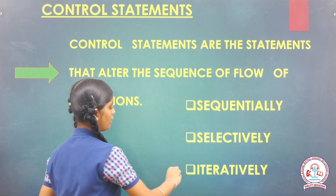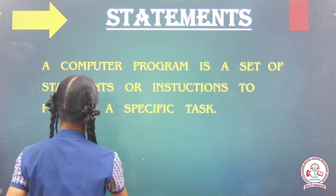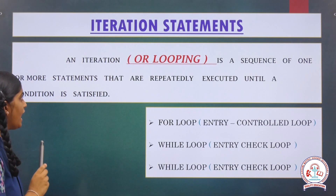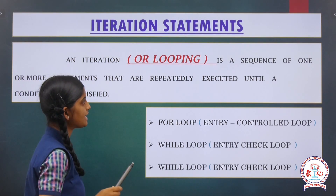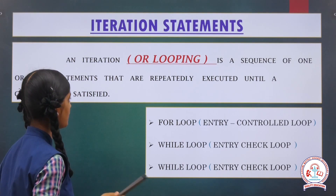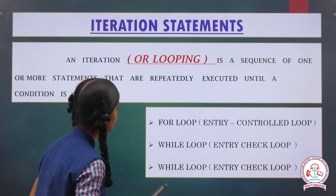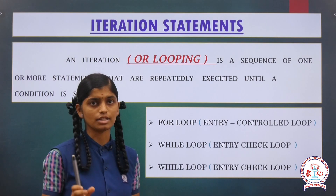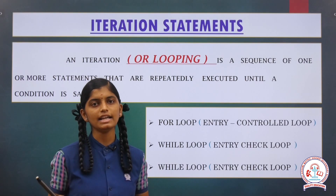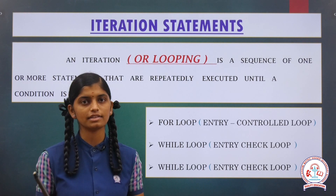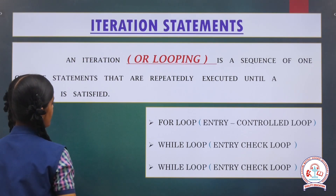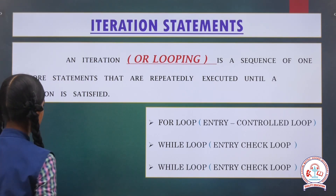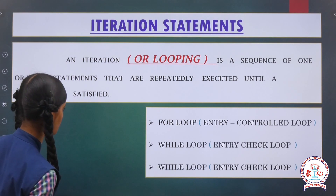Third — so this is our today's topic. Iterative statements. An iteration, also called looping, is a sequence of one or more statements that are repeatedly executed until a condition is satisfied. This iteration statements work in three different ways: first is for loop, second is while loop, third is do-while loop.